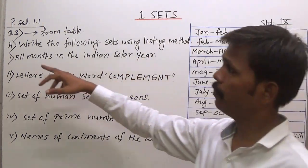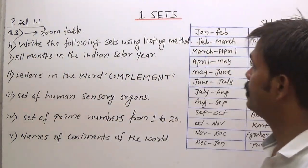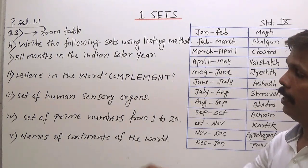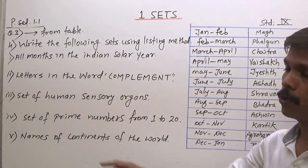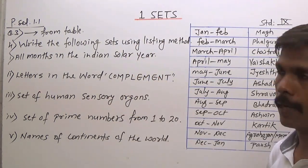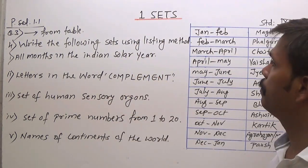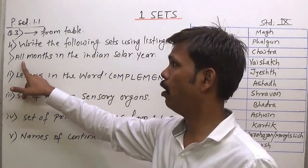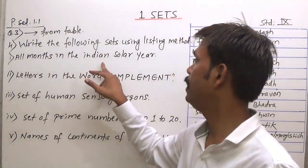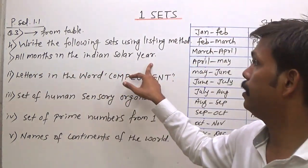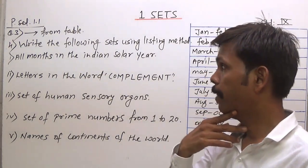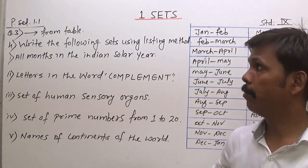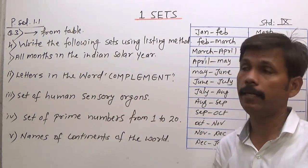Then question number 4: write the following sets using listing method. You have five questions. The first question is: all months in the Indian solar year.